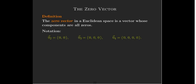A very special vector that we're going to refer to a lot is called the zero vector. All of its components, so a zero vector in Euclidean space is a vector whose components are all zero. So sometimes we're going to put a subscript on there. So a zero with an arrow and a subscript of two means that we're talking about the zero vector in R2.